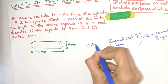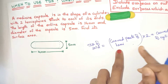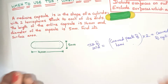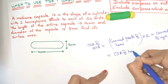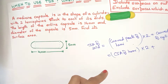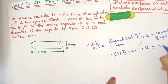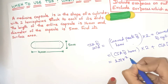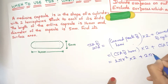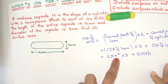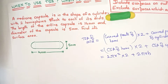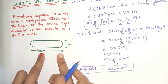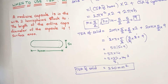So this is going to be the TSA of the solid. The curved part of the hemisphere is given by the CSA of the hemisphere, multiplied by 2, plus the CSA of the cylinder. That gives us: 2 × 2πr² plus 2πrh. Substituting the known values, the total surface area of the medicine capsule comes out to be 220 millimeters square.